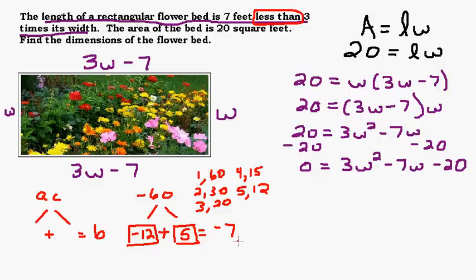From the factoring using the AC method video, I suggested if you have one positive and one negative that you always put the negative first because now you're going to go over here and you're going to rewrite this middle term,